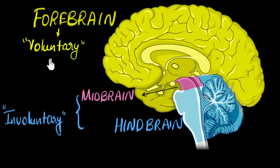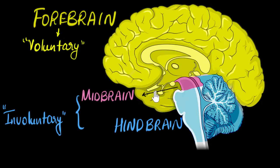So how do we remember which part does which? The way I like to think about it is: what makes humans special is their big forebrain. We have this amazing intellectual ability — our intelligence. So the forebrain gives us our intelligence, which is why I can do all my thinking, decisions, walking, and talking. That's how I remember that the forebrain controls voluntary actions.